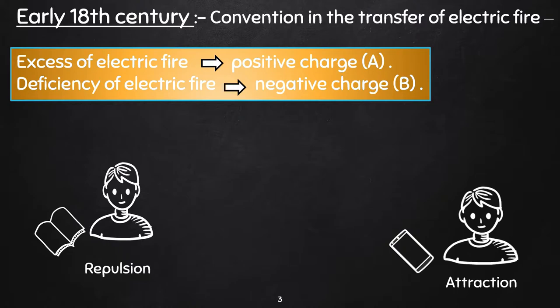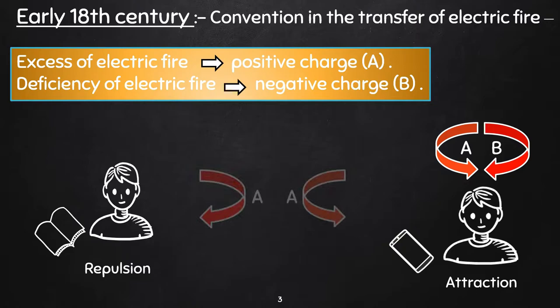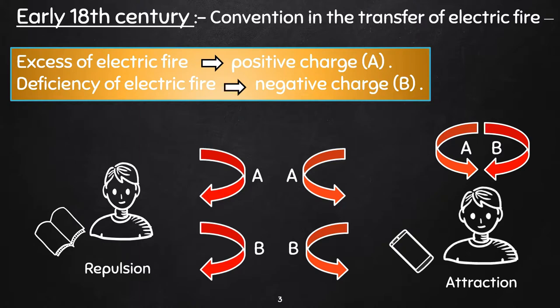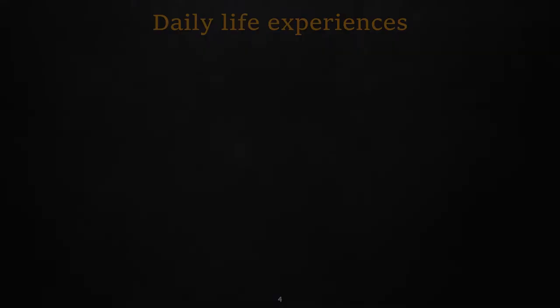But A repulses A, and B repulses B after rubbing A and B. This phenomena directly concludes that if two objects have same property - that is gain of electric fire or lose of it - they repulse each other. And if they possess opposite property, they only attract. A very different picture from the laws of gravity, where there is only attraction.